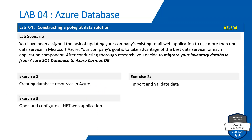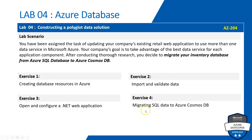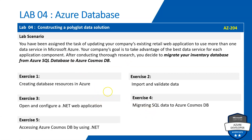In Exercise 3 we'll create a .NET web application that will make use of the resources and data created in Exercises 1 and 2. In Exercise 4 we'll migrate SQL data to Azure Cosmos DB, which is the main intention of Lab 4. In Exercise 5 we'll write code to access Azure Cosmos DB using .NET code. In the last exercise, Exercise 6, we'll clean up all the resources so we don't get charged.